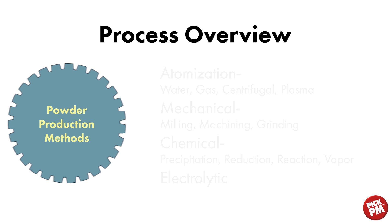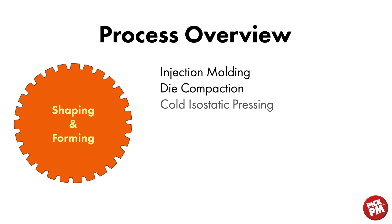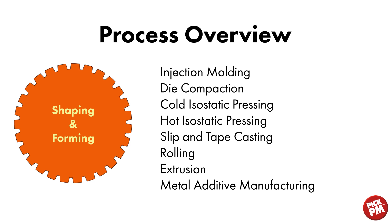From powder production, we move to the shaping and forming of metal powders. Methods include injection molding, die compaction, cold isostatic pressing, hot isostatic pressing, slip and tape casting, rolling, extrusion, and metal additive manufacturing.